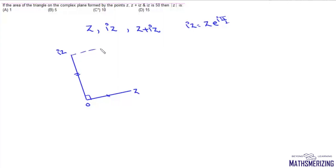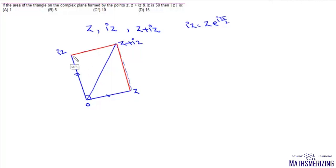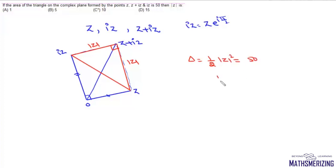z plus iz is the addition of these two complex numbers, found using vector addition. The triangle formed by z, iz, and z plus iz is an isosceles right-angle triangle. Both legs have length mod z, so the area equals one-half times mod z squared. Setting this equal to 50 gives mod z equals 10, which is option C.